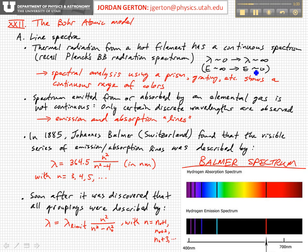If you used a prism, for example, to split out the different colors — if you took the light emitted from a thermal source and put it through a prism and separated the colors — you'd see a continuous distribution, a rainbow of colors. Those colors would actually extend beyond the visible range into the short wavelengths, the UV, and the long wavelengths, infrared.